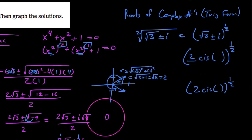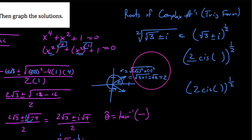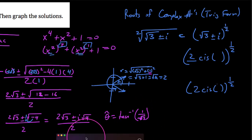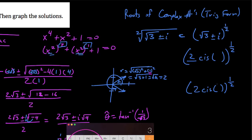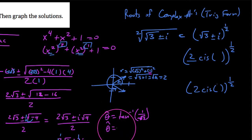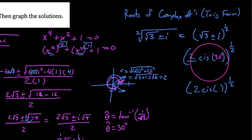What are these arguments? We say tangent inverse of y over x is going to be our argument value. In this case, our y value is 1 and x is √3. So taking the tangent inverse of 1 over √3, we get a reference angle of 30 degrees. In both of these instances we get a 30-degree reference angle. So what are our arguments? One argument is 30 degrees, and the other argument is 30 degrees shy of 360, so that's 330 degrees.